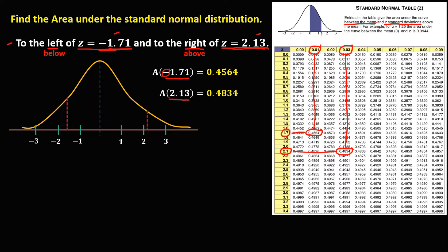This is the mean, and this one is negative 1.71, so this area between the mean and negative 1.71 is 0.4564. Then from the mean to positive 2.13, the area is 0.4834.